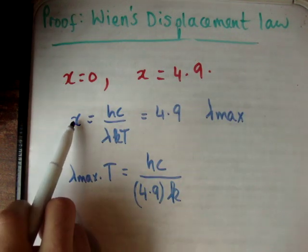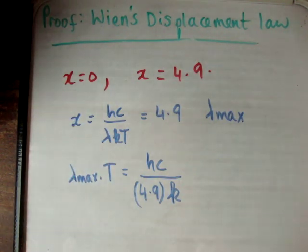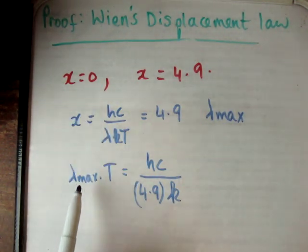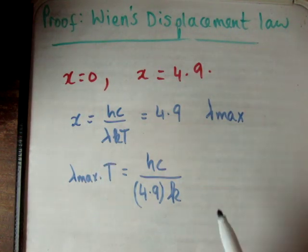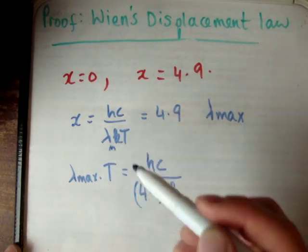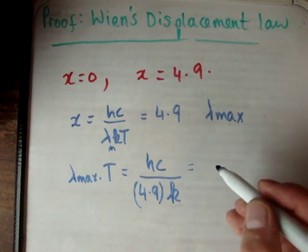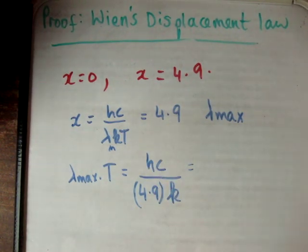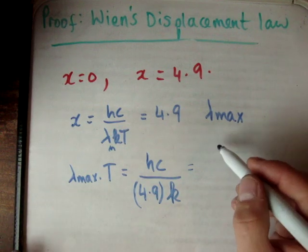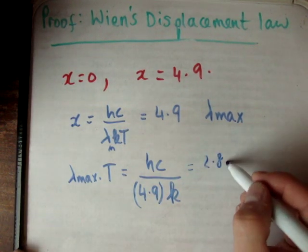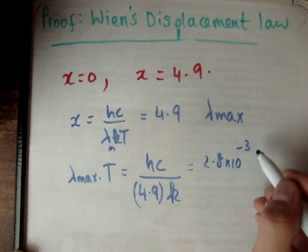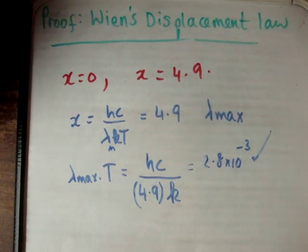So, all we did basically is manipulate that. Drop down my x, bring up t, and bring up lambda as well, because we know this is lambda max. So, you're just manipulating that formula. And if you plug the values of Planck's constant, speed of light, 4.9 and Boltzmann's constant in, you're going to get an answer of 2.8 times 10 to the minus 3.